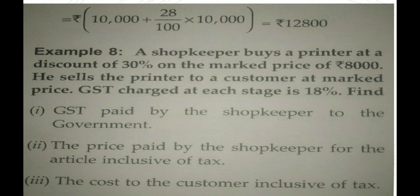A shopkeeper buys a printer at a discount of 30% on the mark price of Rs. 8000. He sells the printer to a customer at mark price. GST charged at each stage is 18%. Find the GST paid by the shopkeeper to the government, the price paid by the shopkeeper for the article inclusive of tax, and the cost to the customer inclusive of tax.